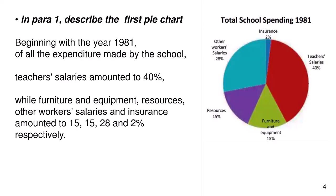In para 1, describe the first pie chart. Beginning with the year 1981, of all of the expenditure made by the school, teachers' salaries amounted to 40%, while furniture and equipment, resources, other workers' salaries and insurance amounted to 15, 15, 28 and 2% respectively.